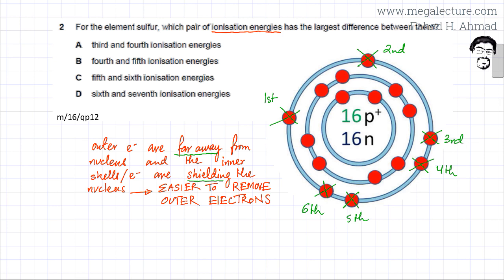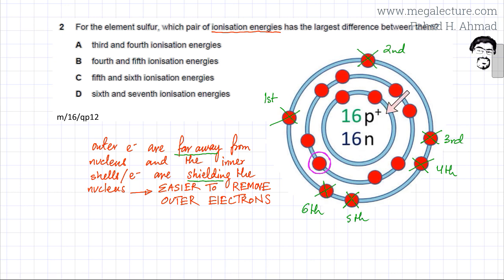But when you try to remove the seventh electron, it is now closer to the nucleus — this is the seventh electron I am trying to remove. This electron is closer to the nucleus and the shielding effect is much lesser, because now you just have one shell between the nucleus and this electron. So removing this electron becomes very, very difficult compared to the six outer electrons.